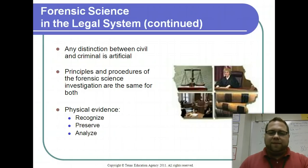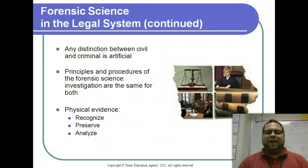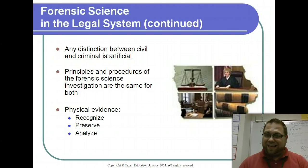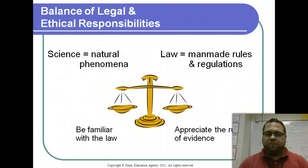There is no distinction between civil and criminal when talking about forensic science and the legal system. The principles and procedures of forensic science investigation are the same for both. The three main things when dealing with evidence — and you need to know these — are that your job as a forensic scientist is to recognize evidence, preserve it, and analyze it. We'll go into more detail about each of those in a moment.